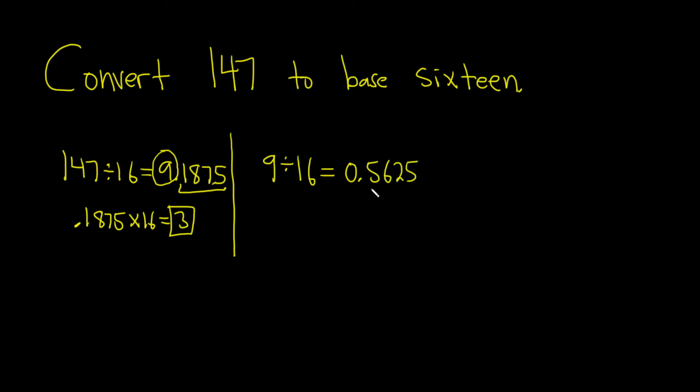To find the remainder, you just take this and multiply it by 16. 0.5625 times 16, which is 9. Which makes sense, right? 16 goes into 9, 0 times, and so 9 is left over.